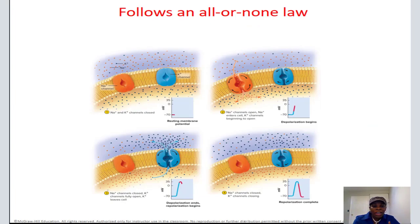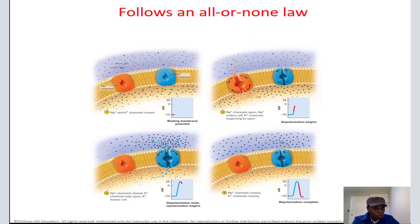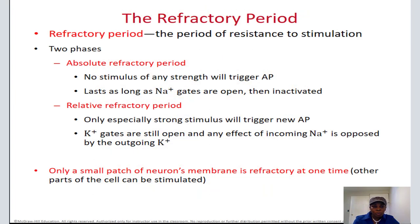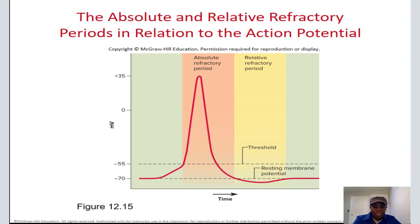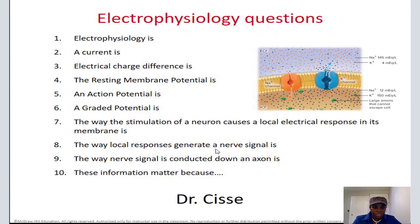This action potential follows an all-or-none law — it either happens or it doesn't. There's no halfway. But a graded potential may happen halfway and stop. During an action potential, there's a period when no other action potential is possible — we call that the absolute refractory period. But at the end, during repolarization, depending on the power of the stimulus you give, you can create another action potential. This is the relative refractory period.